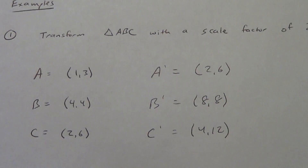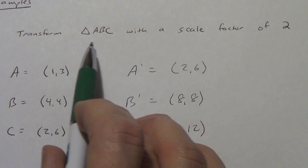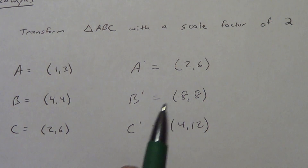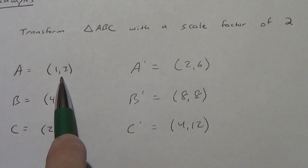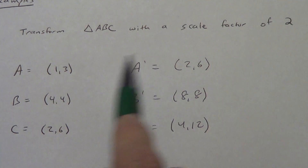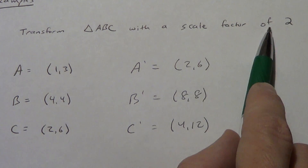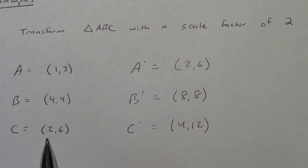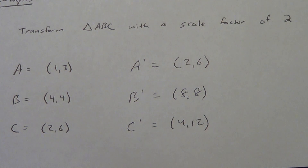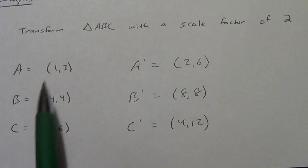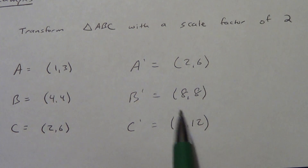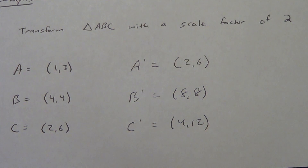So let's talk about that shortcut. Remember the example we just did? We transformed triangle ABC with a scale factor of two. We started with these points and did all the counting. What happens if I take all these numbers and multiply them by K? One, three times two gives me two, six. Four, four times two gives me eight, eight. Two, six times two gives me four, twelve. So as long as the center of dilation is at zero, zero, you can just take your original X and Y values, multiply them by K, and you'll get your new XY values. Nice and easy — don't have to do a bunch of counting.